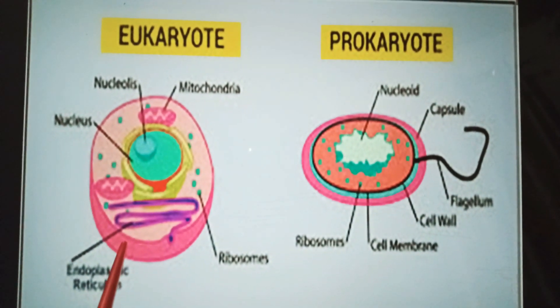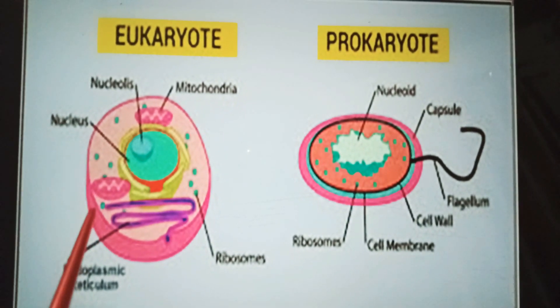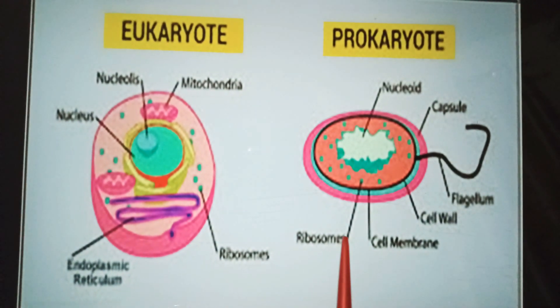The cell wall of eukaryotic cell is made up of cellulose in plants or chitin in fungi.